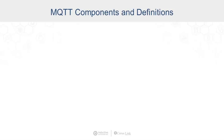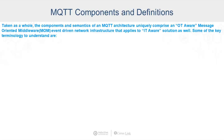To get started on how MQTT works, the first thing we need to do is look at some of the definitions and the components that we need to understand about an MQTT architecture. Taken as a whole, the components and semantics of an MQTT architecture really comprise what's called OT-aware message-oriented middleware.